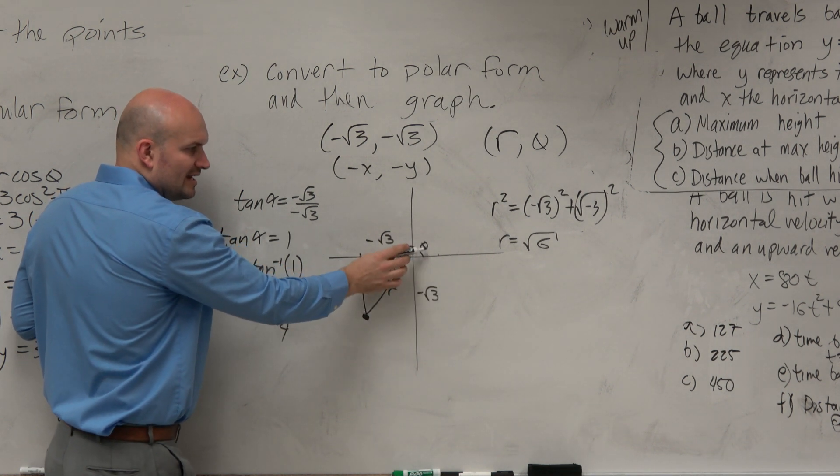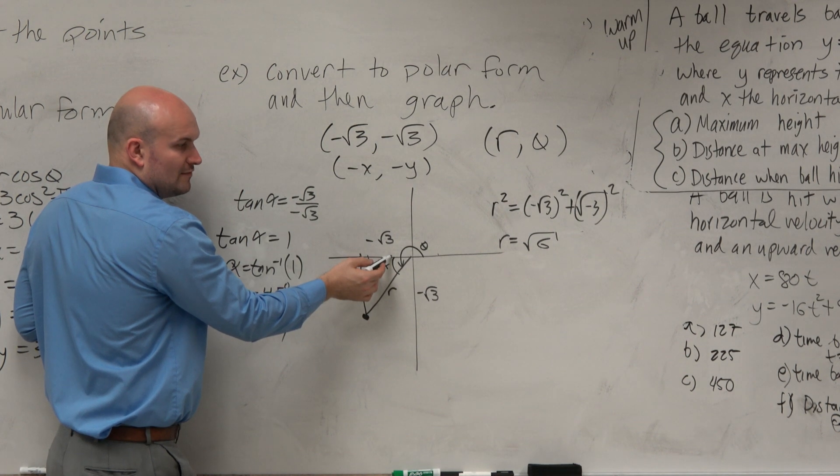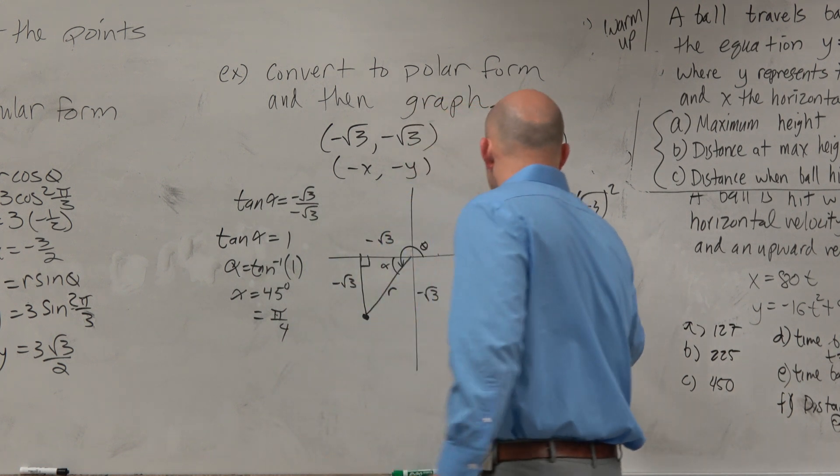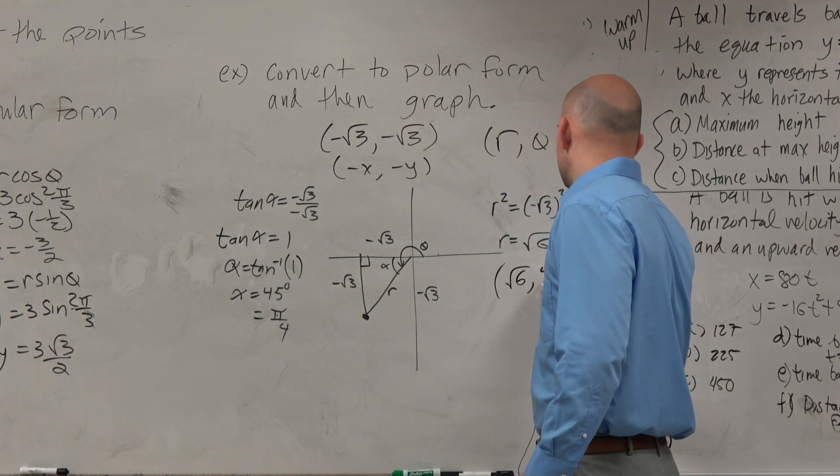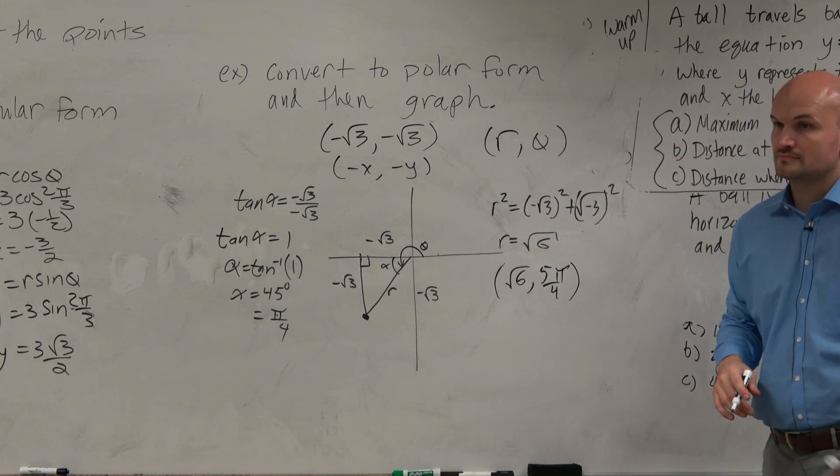well, then from here, again, we've got to go from standard form. So from here to here is 4 pi over 4 plus a pi over 4, which is 5 pi over 4. So the answer would be square root of 6, 5 pi over 4. Okay.